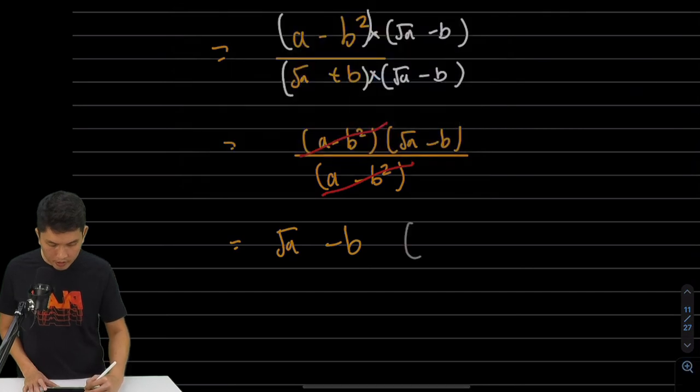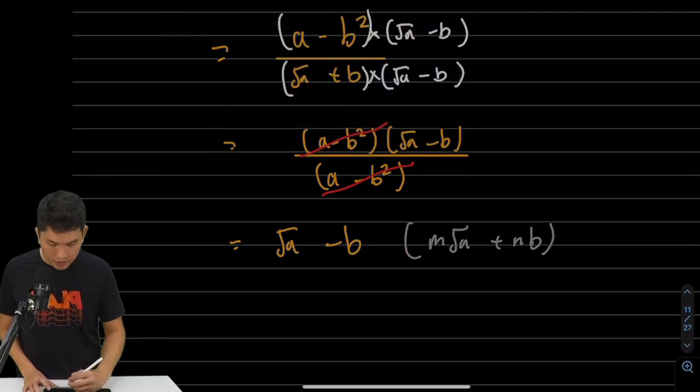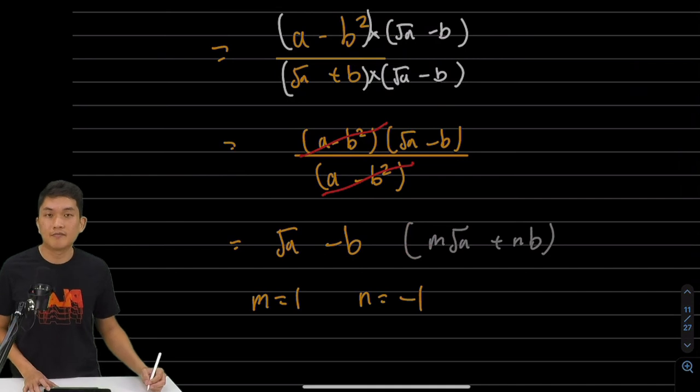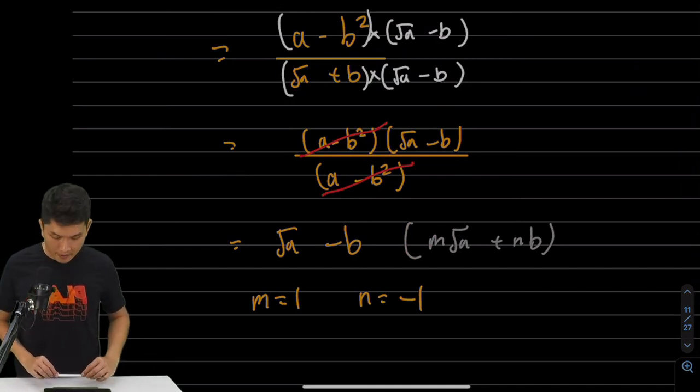So the question states that, hey, you have to write it in the form of M root A plus N B. And we have done that. Just that M is equals to 1 and N equals to negative 1. And that is question 5B.